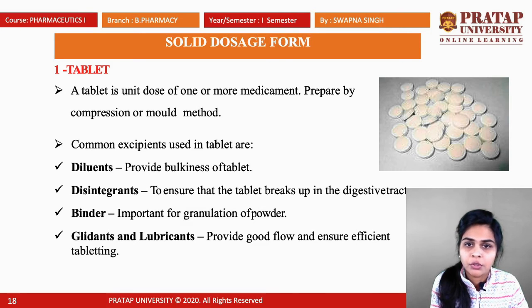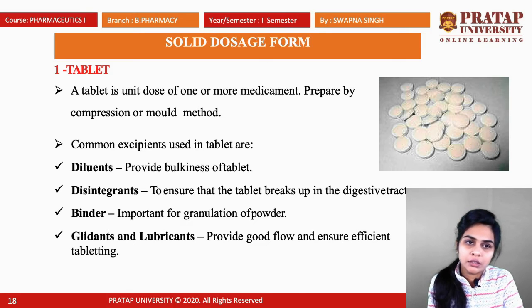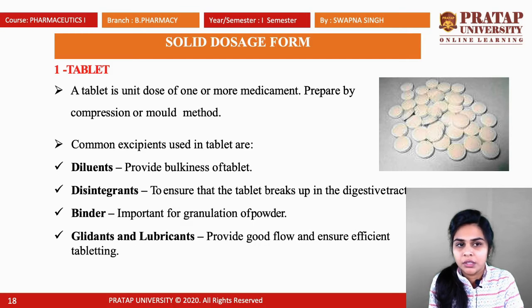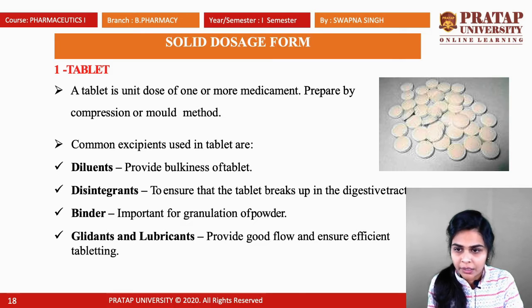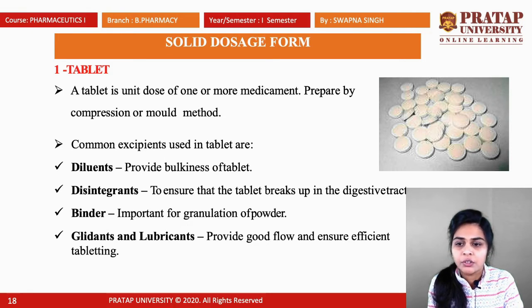Tablets are prepared by compression or mold methods. Common excipients used in tablets include diluents (to provide bulkiness), disintegrants (to ensure the tablet breaks up in the digestive tract), binders (important for granulation of powder), and glidants and lubricants (to provide good flow and ensure sufficient tableting).